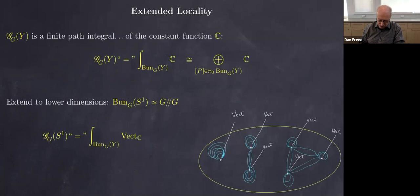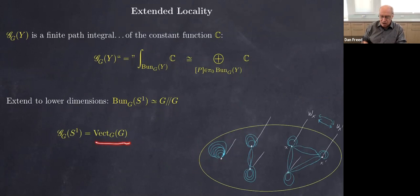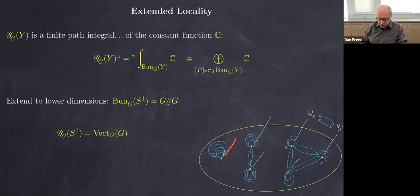Basically, we look at the groupoid of bundles on the circle and we want to assign a vector space to each object and an isomorphism of vector spaces to each arrow. What ends up happening is that we get an equivariant vector bundle over the group, equivariant for the conjugation action. In this simple gauge theory for a finite group, the extended locality gives these equivariant vector bundles — a vector space at each group element and an isomorphism of vector spaces for every group element acting by conjugation.